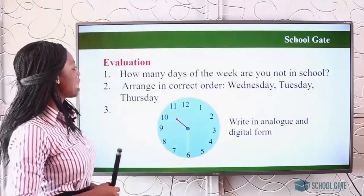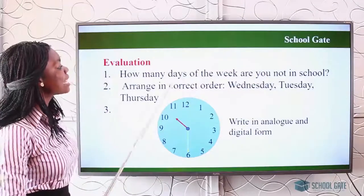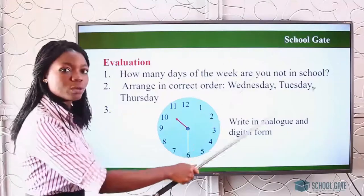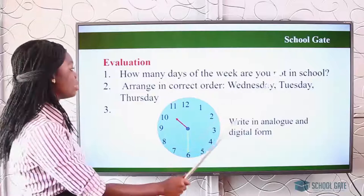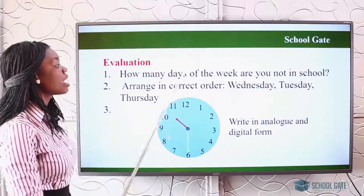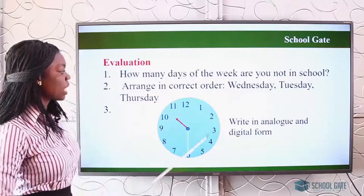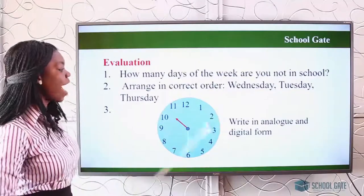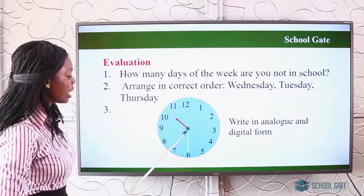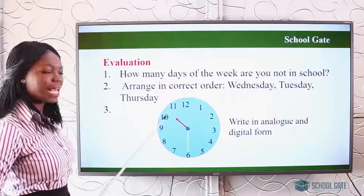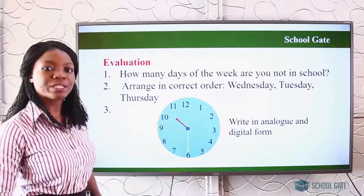Now let us look at the evaluation questions. How many days of the week are you not in school? We go to school from Monday to Friday. Arrange in correct order: Wednesday, Tuesday, Thursday. And here is a clock — we are asked to write in analog and digital form. The long hand is on six and the short hand is in between ten and eleven.